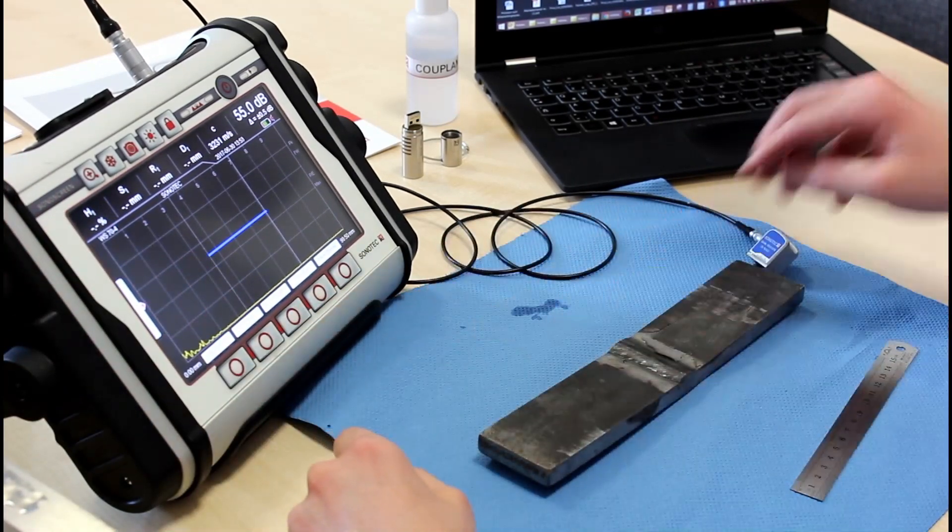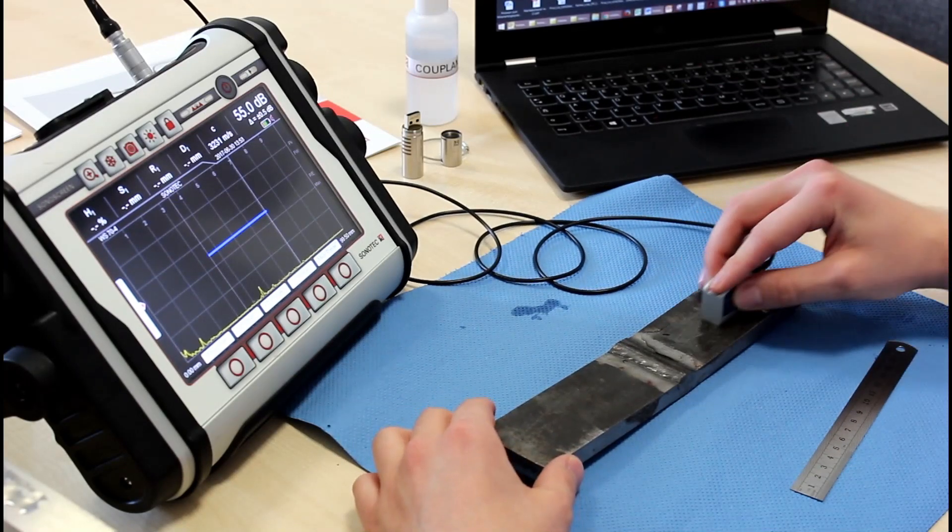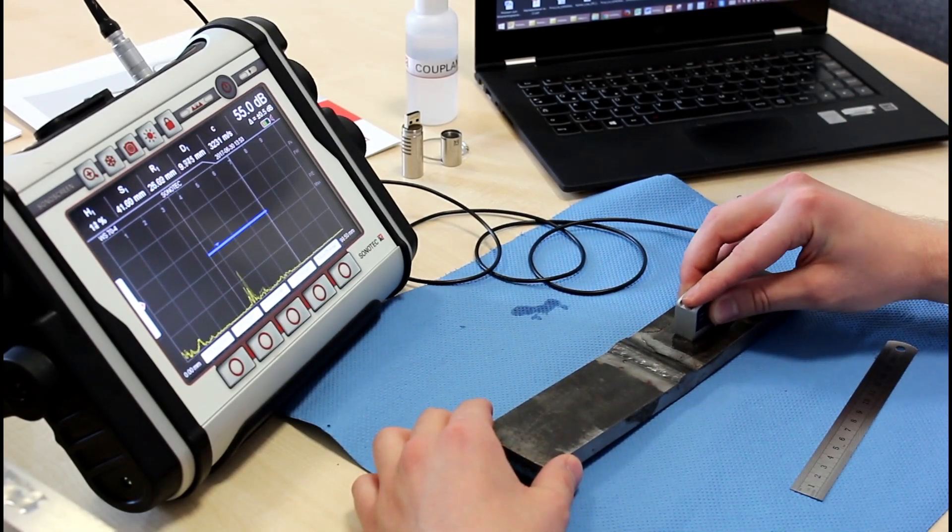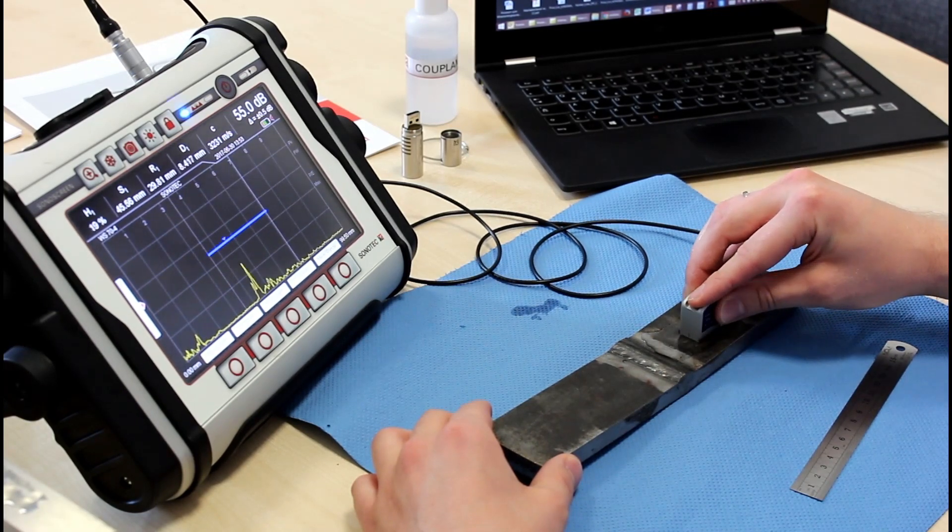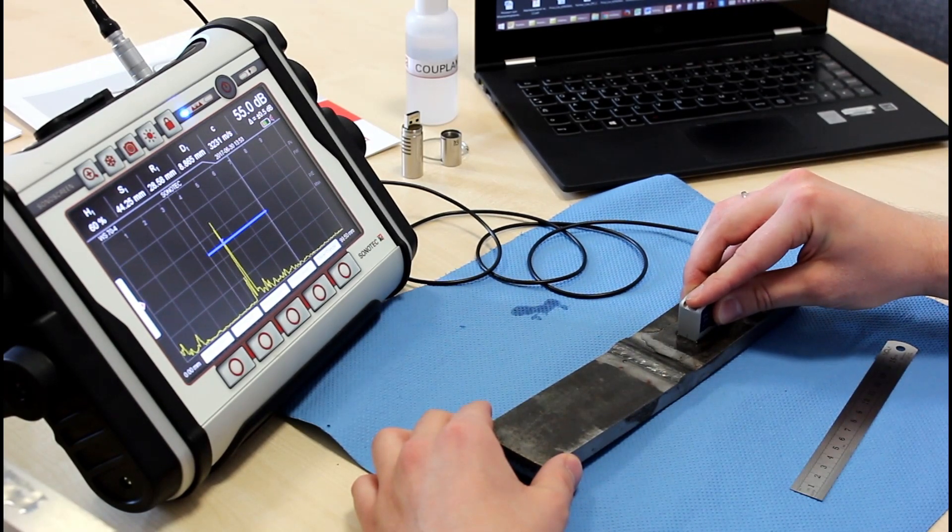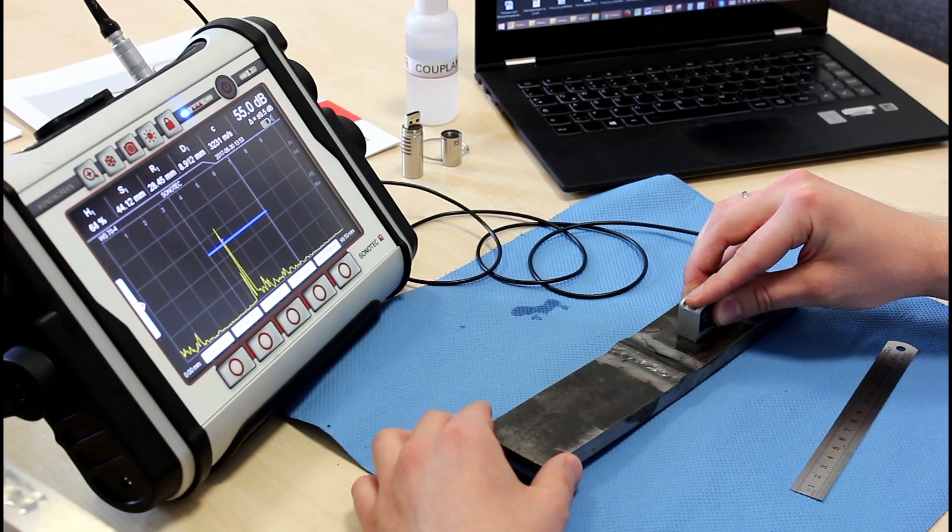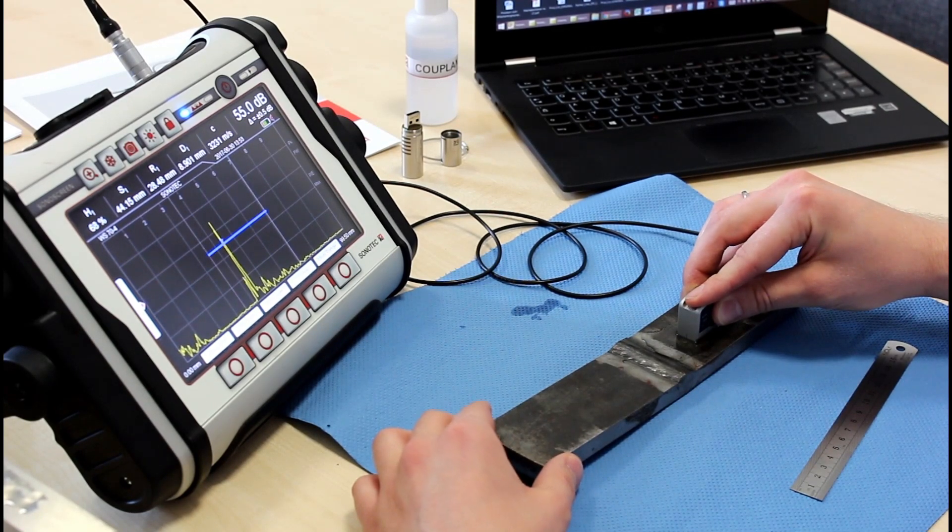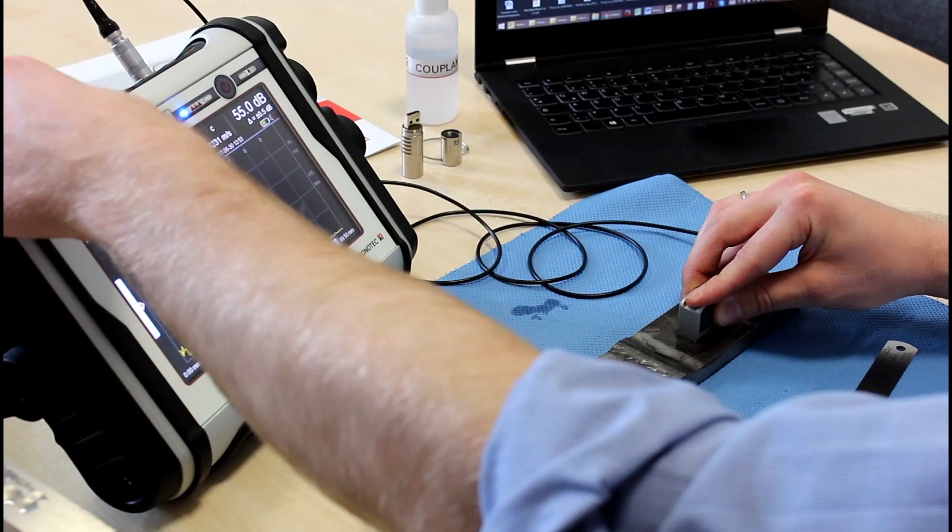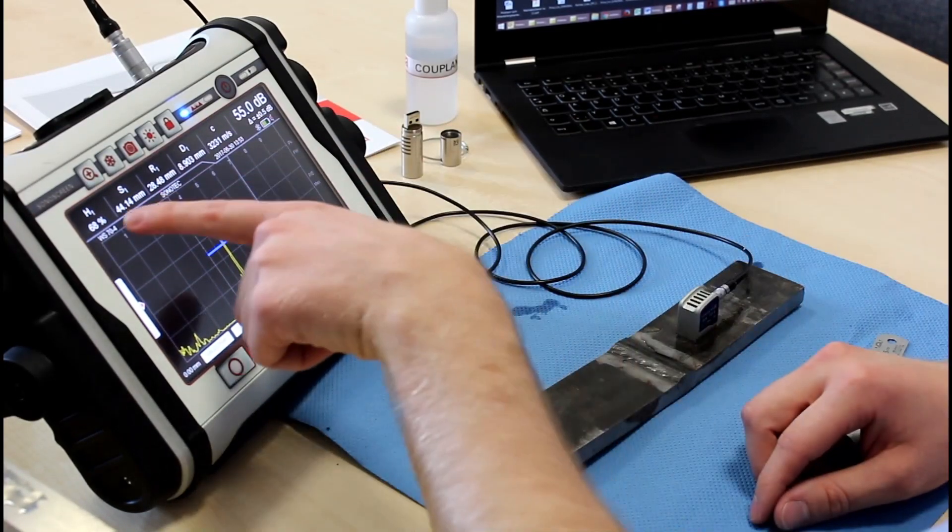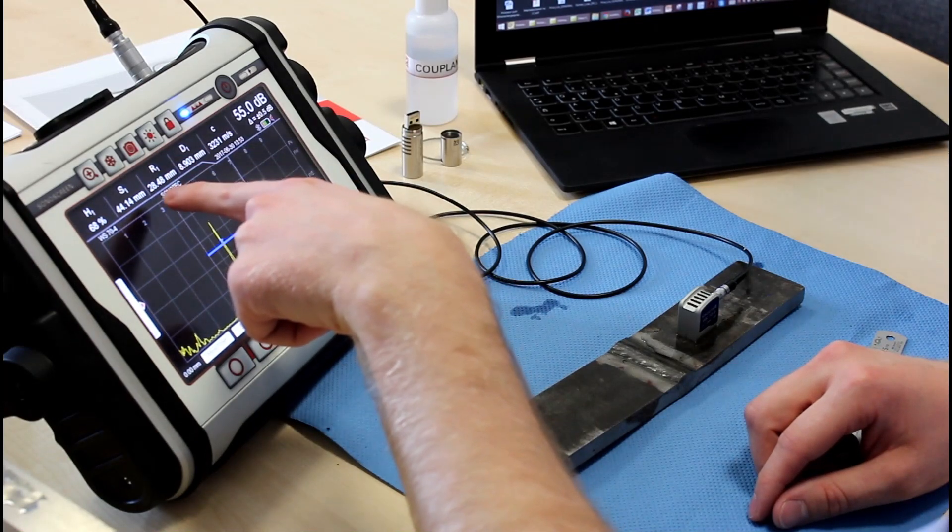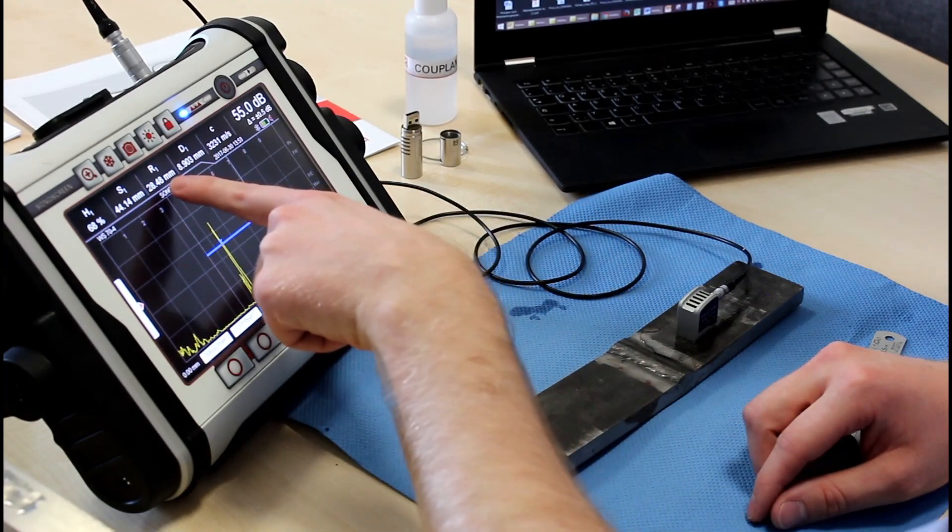So we have a flaw right here. Let's freeze the screen. And we can see that the distance from the top of the probe is about thirty millimeters, which is that value. And the depth of the flaw is approximately eight point five millimeters. So that is right in the middle of our weld seam. Should be correct.